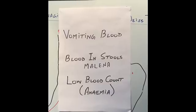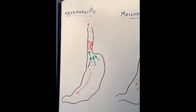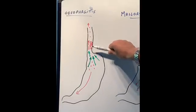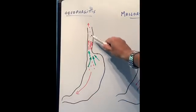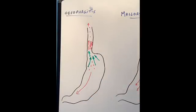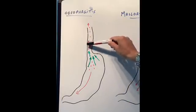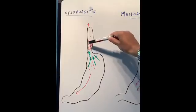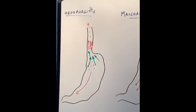Now I'm going to talk about the first two conditions: esophagitis and Mallory-Weiss tear. The first condition is esophagitis. I have made little red spots and a red line on the diagram — these represent blood loss. In esophagitis, as discussed in previous videos, the commonest cause is the lower end of the gullet becoming very raw and inflamed.